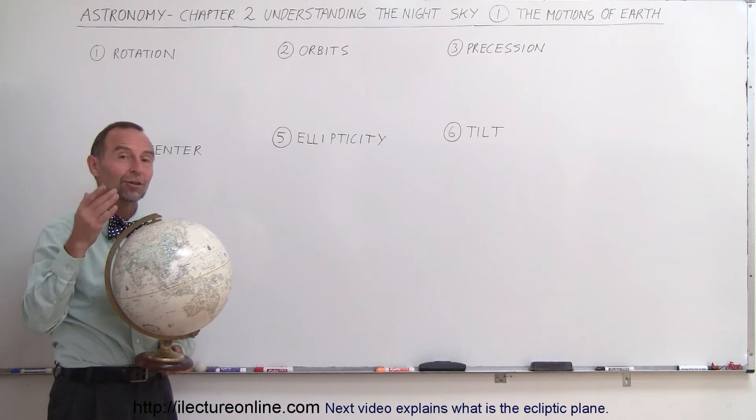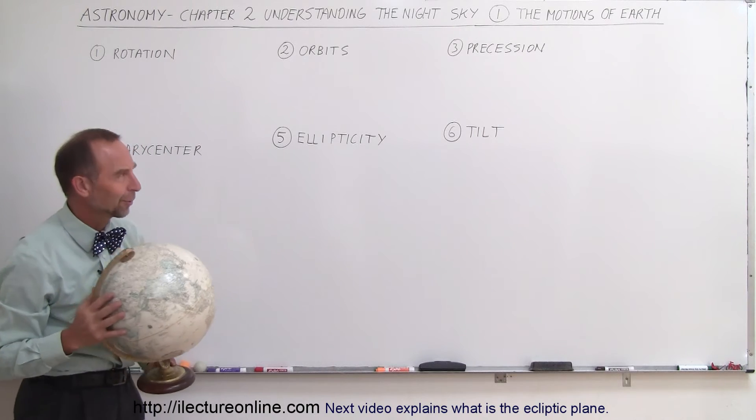different stars will become the Polar Star. Eventually, about 5,000 years from now, the star Vega will be our North Star. Of course, we won't be around at that time.